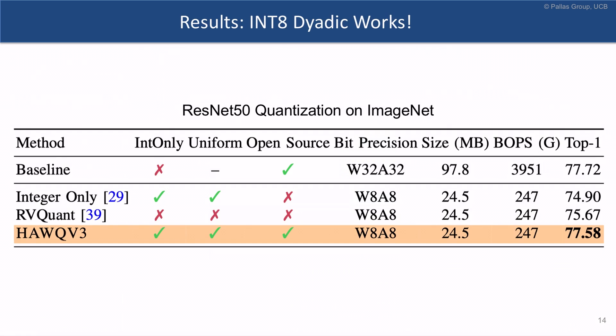We report the baseline accuracy for ResNet-50, which achieves 77.72% top-1 accuracy on ImageNet with 32-bit weights and 32-bit activations. This model has a footprint of 97.8 for the unquantized model with bit-ops of about 4,000 giga bit-ops — essentially floating point multiplied by the bit precision for weights and activations.